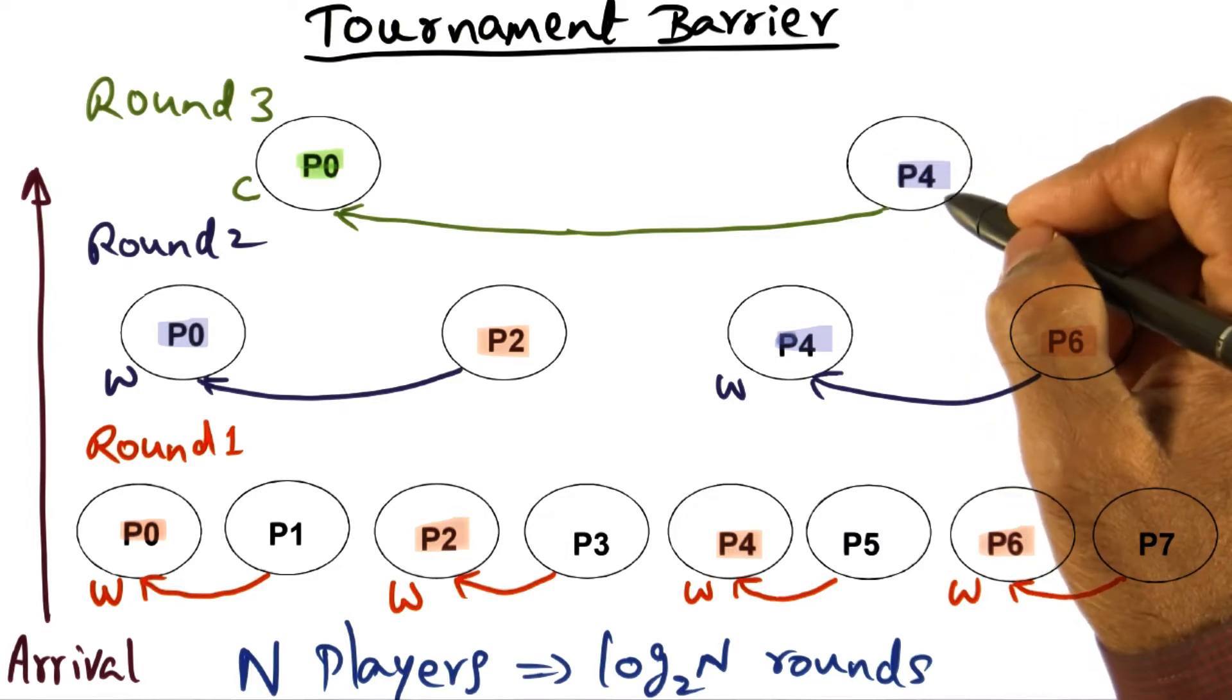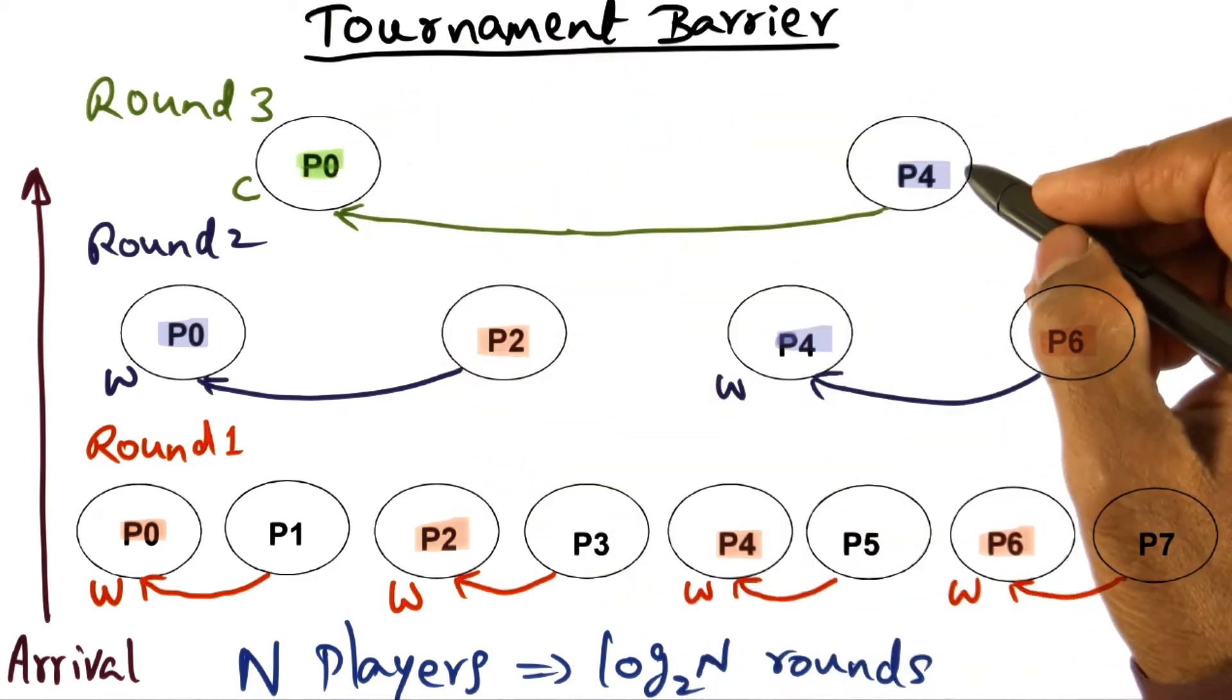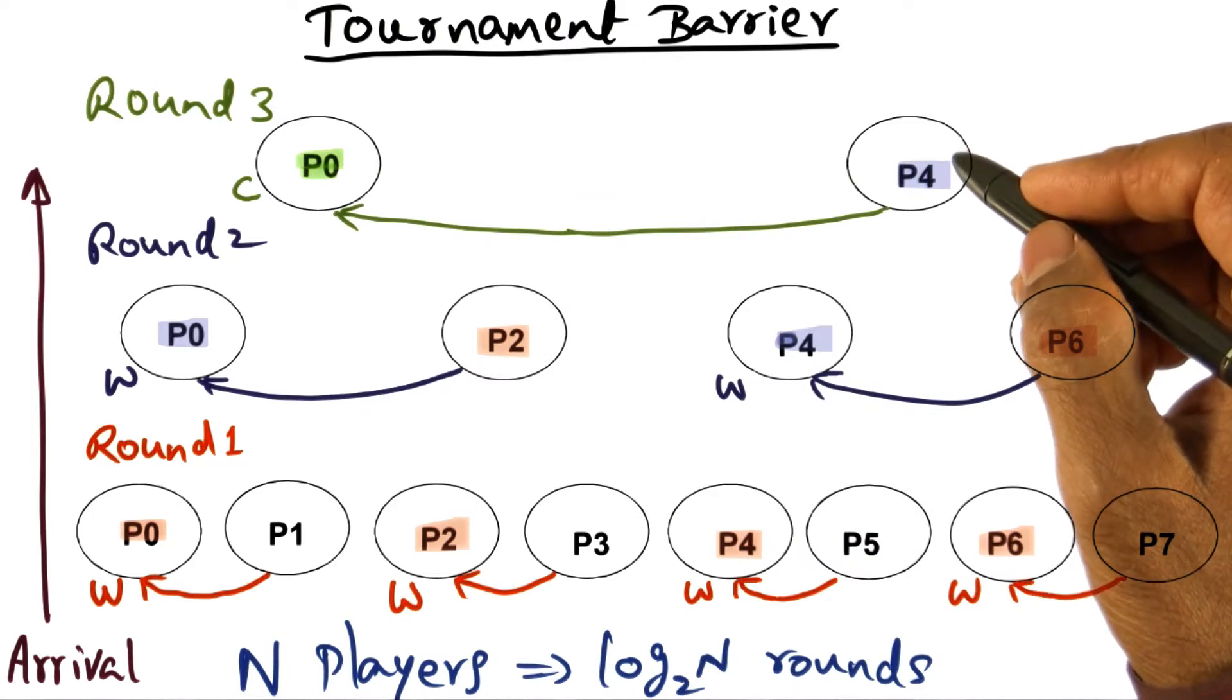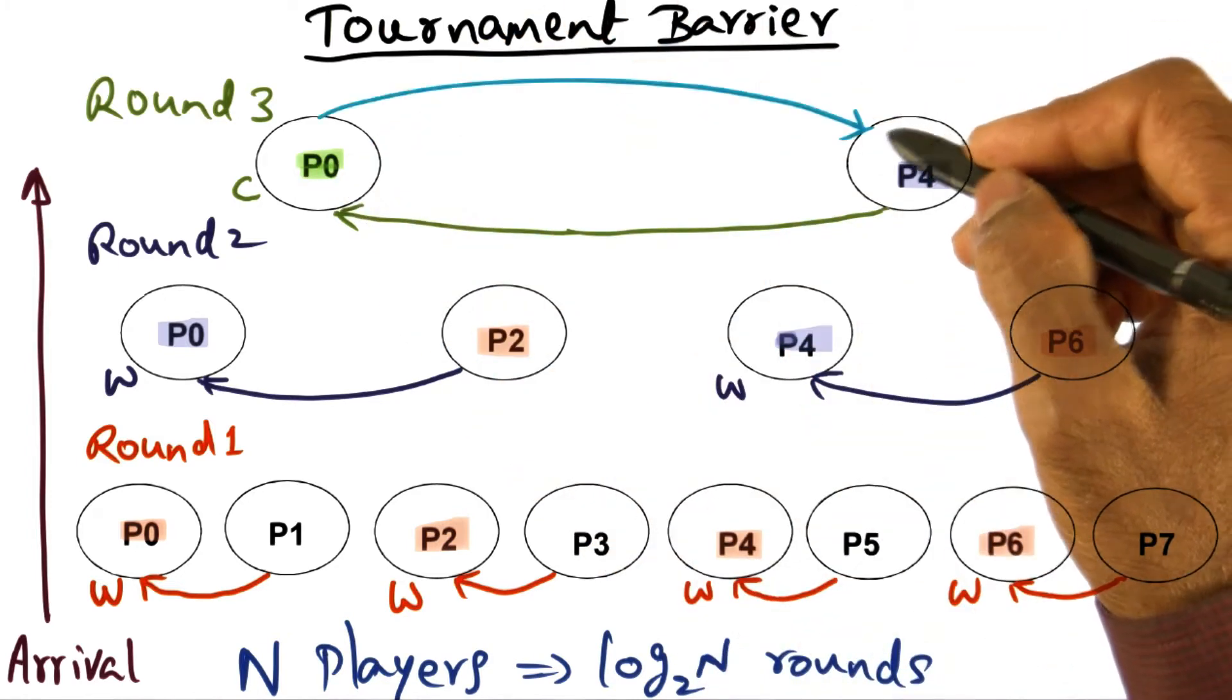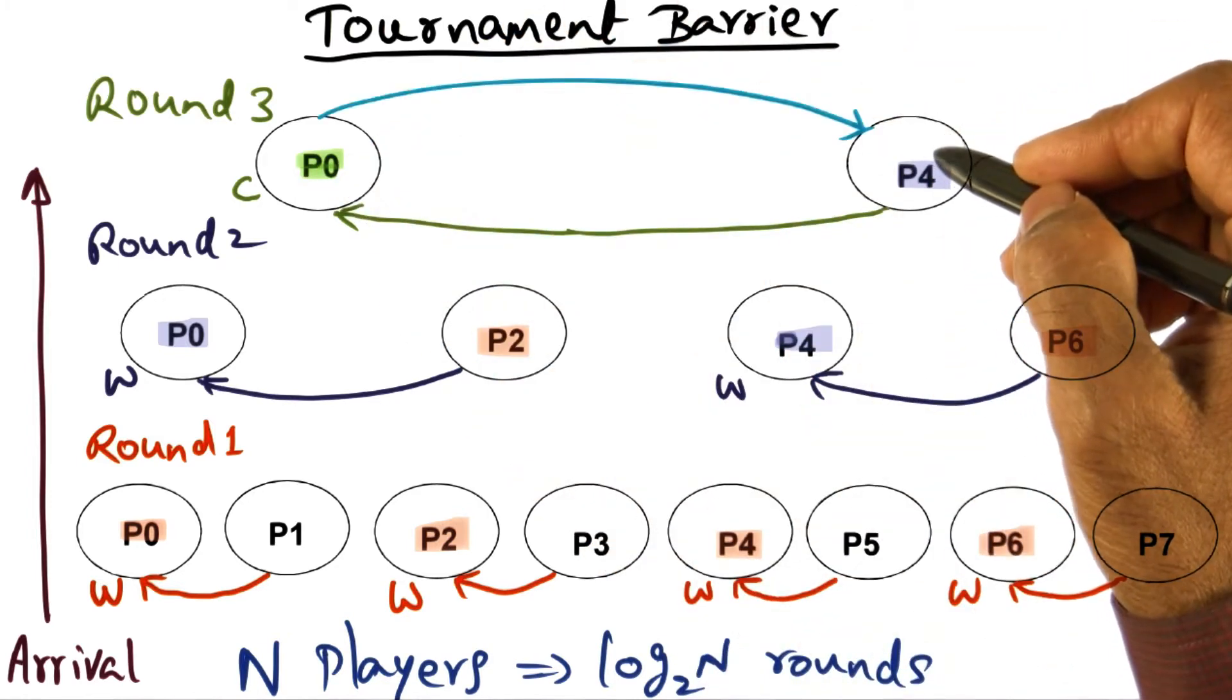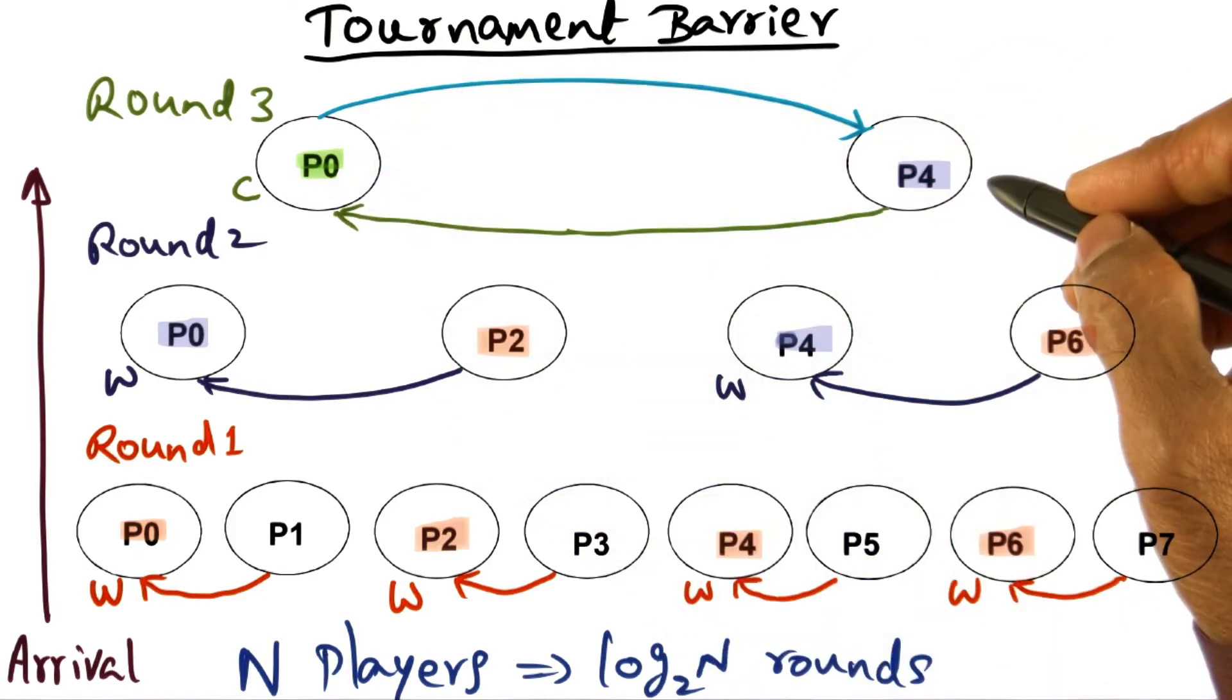P4 with the foul face is waiting for P0 to come over and let him know that it's a good match, shake hands with you. And so P0 is going to come over and let him know, shake hands. So that's the first thing that happens.